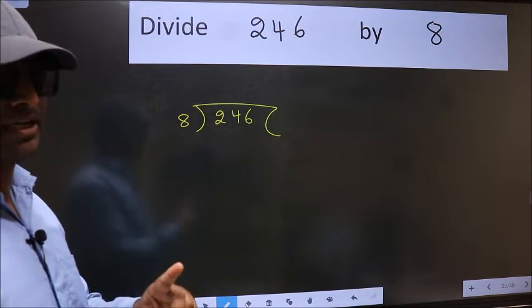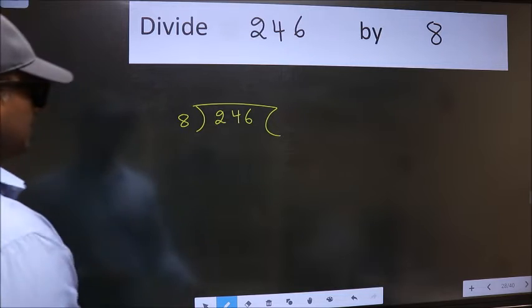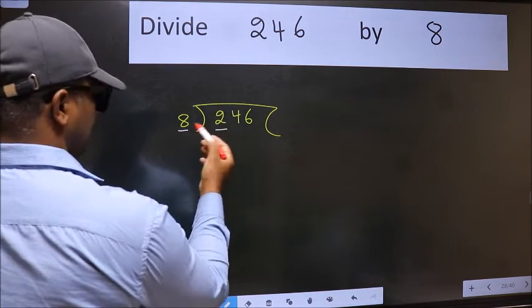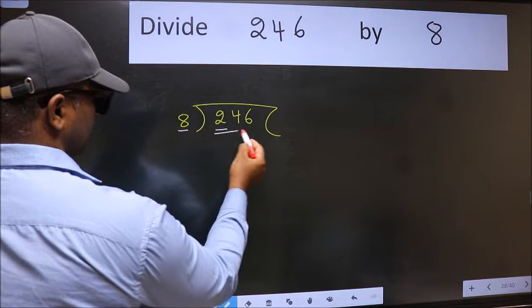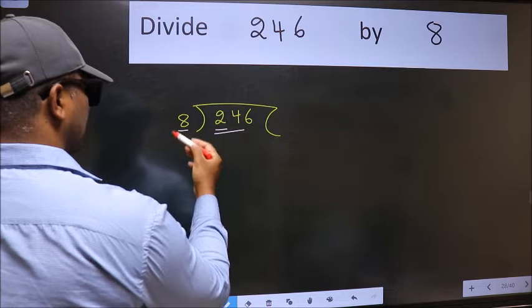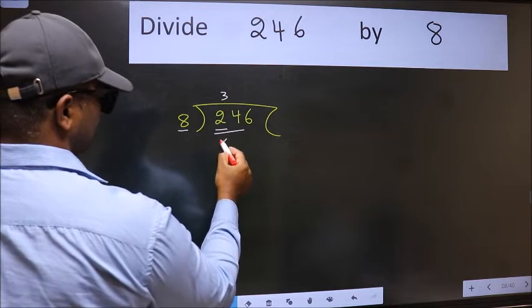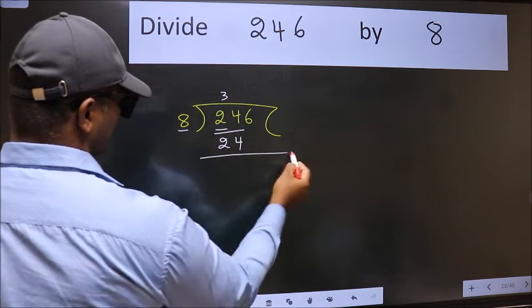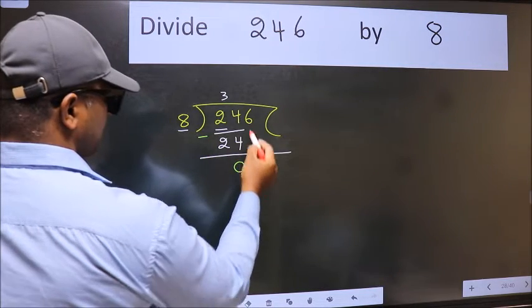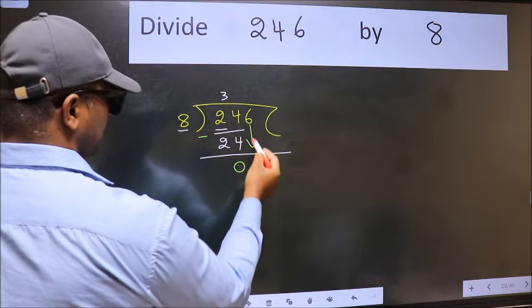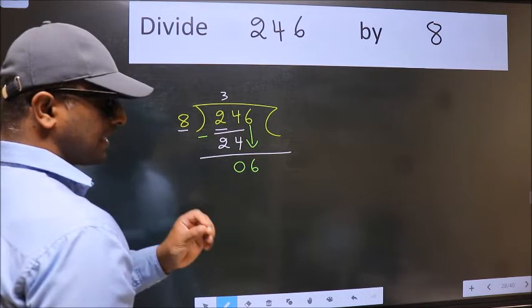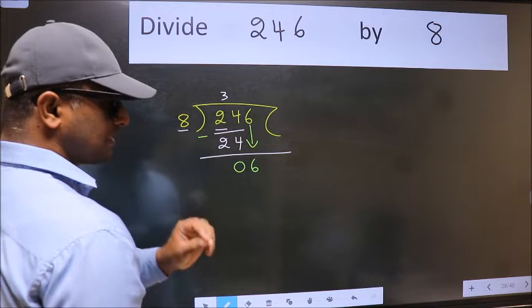Next, here we have 2 and here 8. 2 is smaller than 8, so take 2 numbers: 24. When do we get 24 in the 8 table? 8 times 3 is 24. Now we should subtract. We get 0. After this, bring down the beside number, so 6 comes down. After this step, the mistake happens.